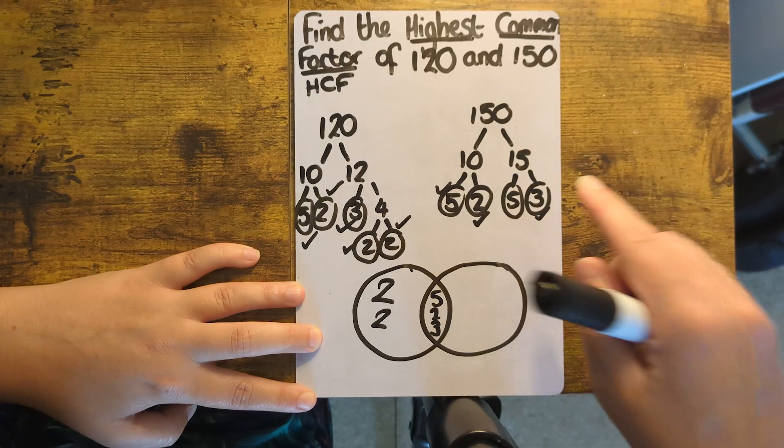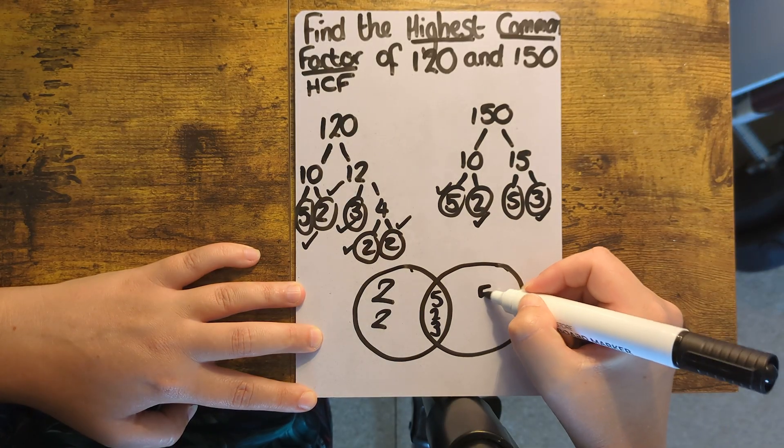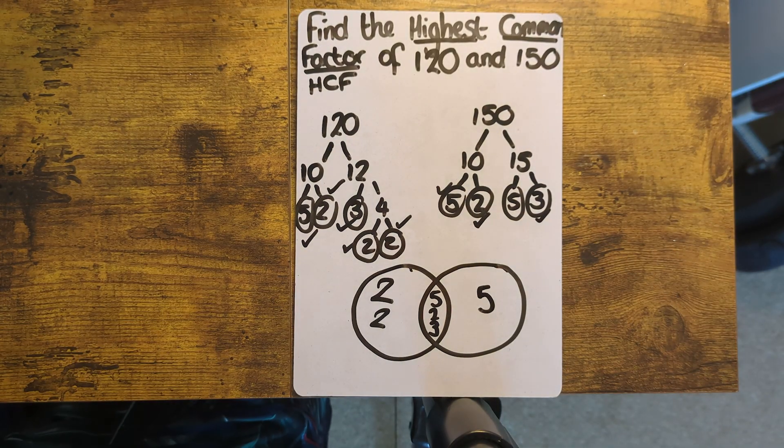And then this five on the 150 tree can't be paired up with another five on the 120, so that goes on the right circle.